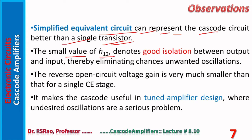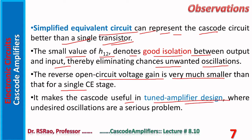The small value of H12 denotes good isolation between output and input, thereby eliminating chances of unwanted oscillations. The reverse open-circuit voltage gain is very much smaller than that for a single CE stage, making cascode useful in tuned amplifier design where undesired oscillations are a serious problem. Tuned amplifiers are high-frequency RF amplifiers used as front-end selective circuits in radio receivers. If cascode design is implemented in tuned amplifiers, this problem is solved to some extent.